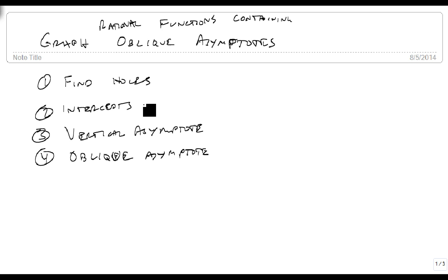We still find our x and y-intercepts by plugging in 0 and setting the numerator equal to 0. We still look for vertical asymptotes, but instead of finding a horizontal asymptote, we're going to look for an oblique asymptote.